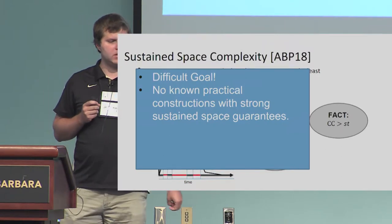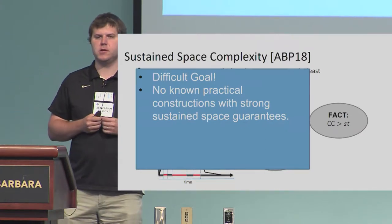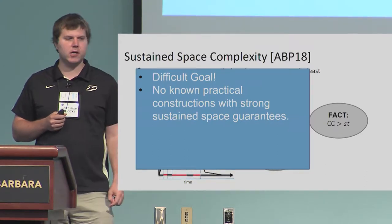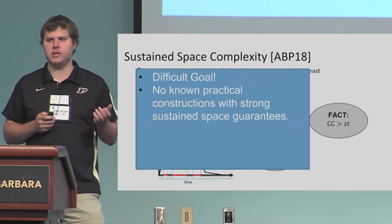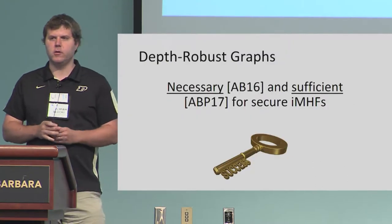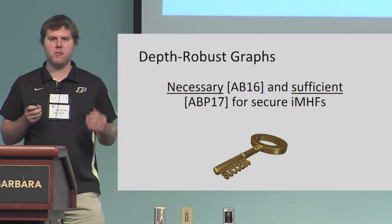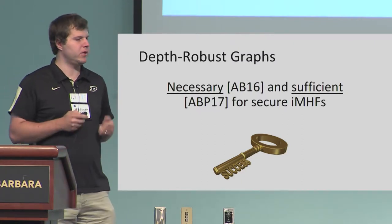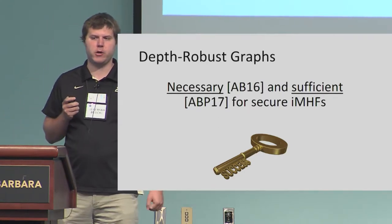Building a graph with high sustained space complexity is a very challenging goal. We gave a theoretical construction at Eurocrypt last year, but there are no known practical constructions with strong sustained space complexity guarantees. Let me give a brief overview of what we know about constructing and attacking depth-robust graphs. In particular, there's a property called depth-robustness, which is really the key to analyzing data-independent memory-hard functions.